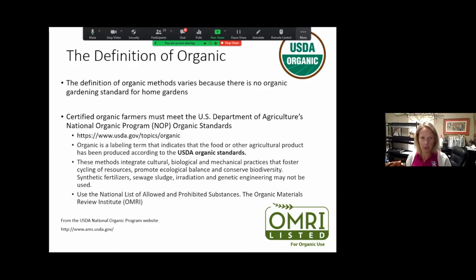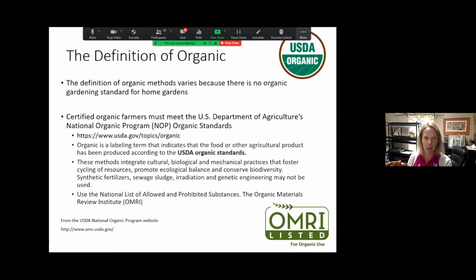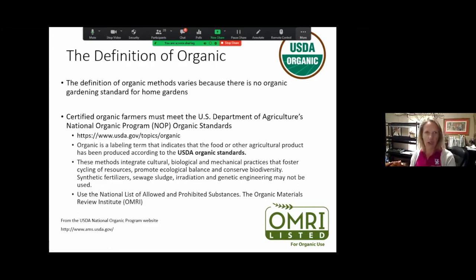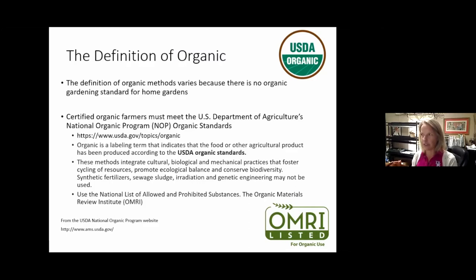The USDA definition also talks about how organic agriculture integrates cultural, biological, and mechanical practices that foster cycling of resources, promote ecological balance, and conserve biodiversity. Synthetic fertilizers, sewage sludge, radiation, and genetic engineering may not be used. There is a list of allowable and prohibited substances on the Organic Materials Review Institute — OMRI — which is what organic farmers use to know what pesticide products they can use. Anyone can go to that website to see what is certified organic or allowable under USDA standards.